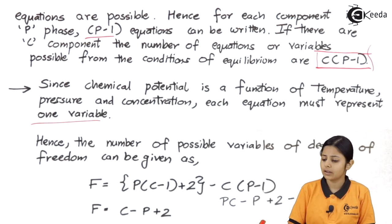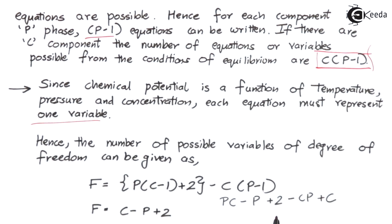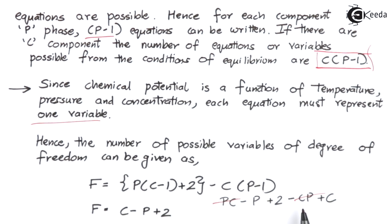Let's start simplifying. We have P(C−1) plus 2 minus C(P−1). Opening the brackets: P(C−1) = PC − P, and C(P−1) = CP − C. So the expression becomes PC − P + 2 − CP + C. The PC and −CP terms cancel out, leaving C − P + 2. This finally gives the equation F equals C minus P plus 2, which is the Gibbs phase rule.